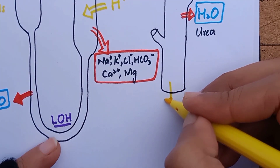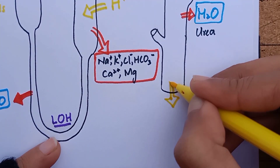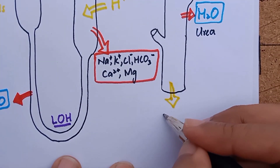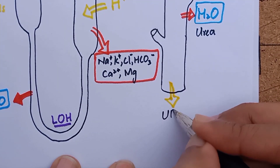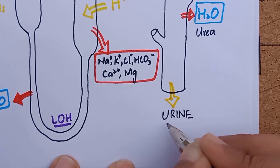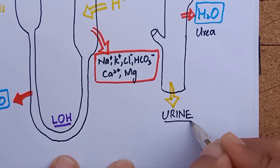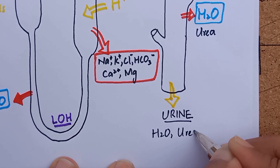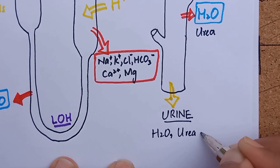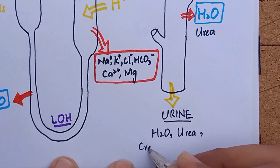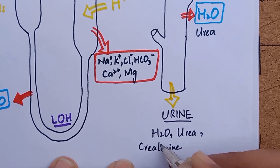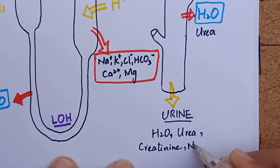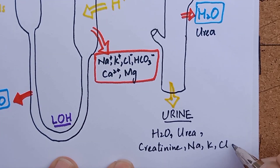After all the reabsorption and secretion, the urine that is excreted contains 95% water, along with some urea, creatinine, and various other electrolytes in smaller amounts.